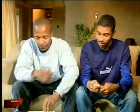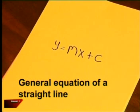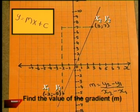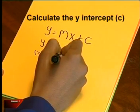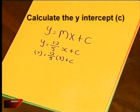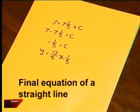Can we go over the steps again? Sure. We begin by writing down the general equation of a straight line. There are two values we must find: m, the gradient, and c, the y-intercept. To find the value of the gradient m, we can either calculate it using the formula or read it off the graph. To calculate the y-intercept or c value, we substitute the coordinates of one of the points on the graph into the equation. Once we have found m and c, we just write down the final equation of the graph.